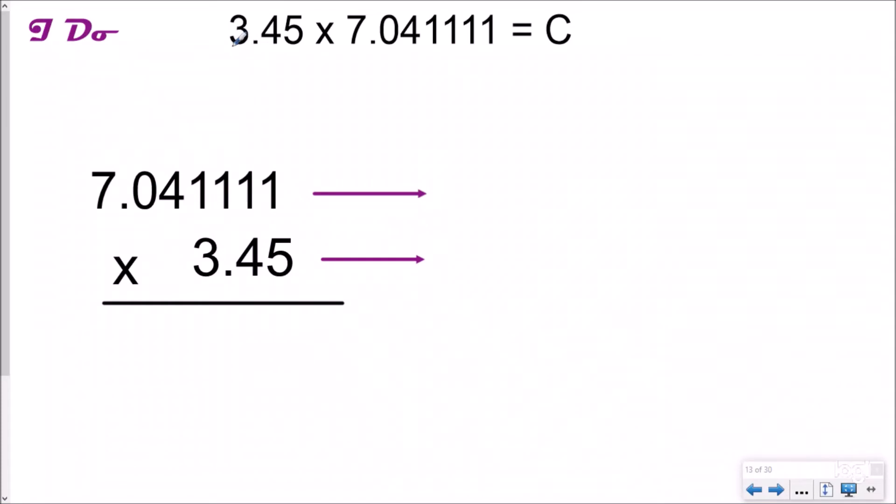Now, I want to estimate 3.45 times 7.041111. And so I want to know, I don't want to know exactly C. I want to know something that is about C. And so when we are estimating, you don't use an actual equal sign because it's not exactly equal. You use an estimating sign, kind of looks like an ocean wave, which is why I think about beaches. So the first thing you want to do, you want to round each of these to the biggest place value if you can, at least the ones place.